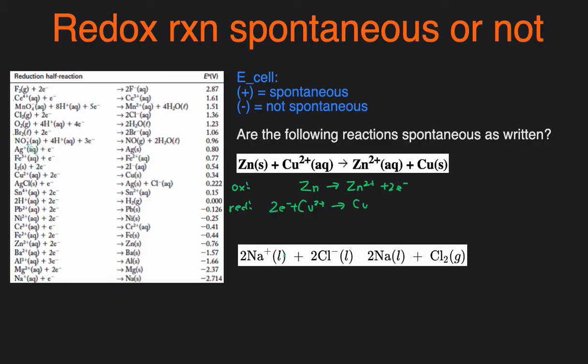So Zn is over here, but these are reduction half reactions. So Zn here is oxidation. That means we need to flip the voltage because when you flip the reaction, the voltage is flipped. When you flip the reaction, a reduction reaction becomes an oxidation reaction. So then this will become 0.76 volts now because we flip the sign. And then the next one is this reaction right here. And this is a reduction reaction, so we can just keep its voltage of 0.34.